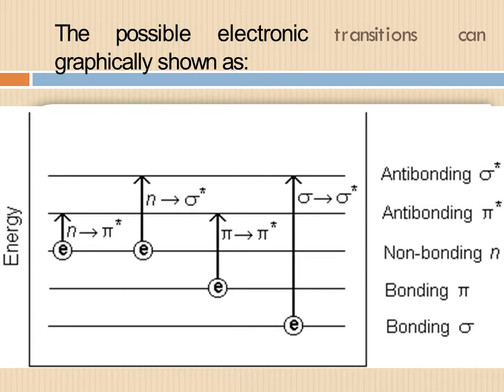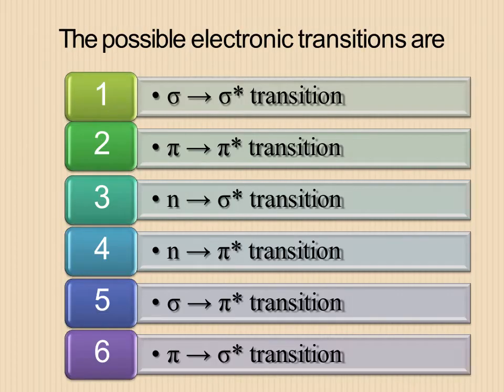As shown graphically, there are bonding sigma, then bonding pi, then non-bonding n, then anti-bonding pi star, and anti-bonding sigma star. These are the possible electronic transitions: first sigma to sigma star, second pi to pi star, third n to sigma star, fourth n to pi star transition, fifth sigma to pi star, and the last one is pi to sigma star transition.